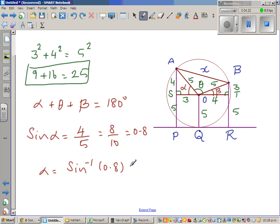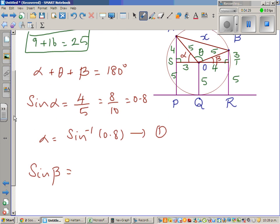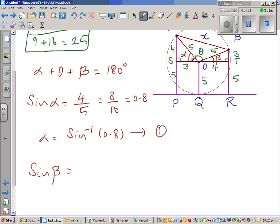Sine beta. Sine beta is opposite over hypotenuse, which is 3 over 5, which is 6 over 10, which is 0.6. This implies beta is sine inverse of 0.6.